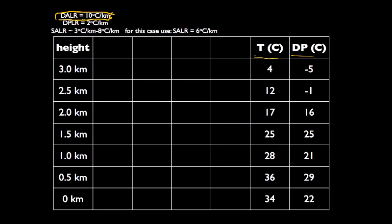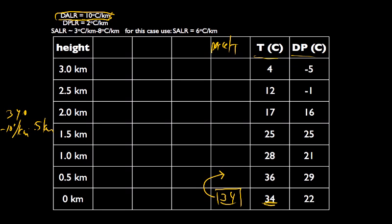If you force air up, it cools at that rate; if you force air down, it warms at that rate. This is called the dry adiabatic lapse rate because it applies to unsaturated air. Starting with air at 34°C at the surface, if we force it up to half a kilometer, the temperature will be: 34°C minus 10°C/km × 0.5 km = 29°C — five degrees cooler.